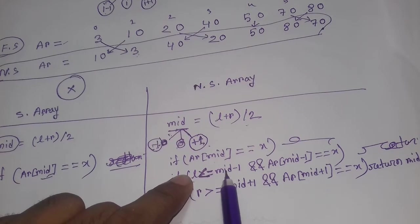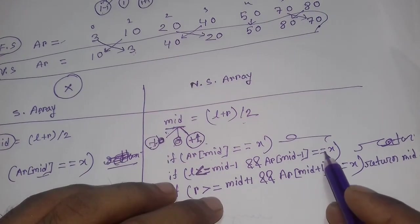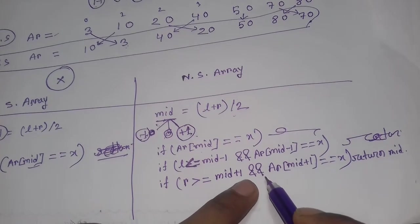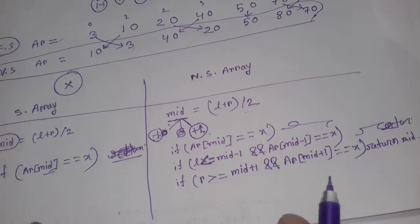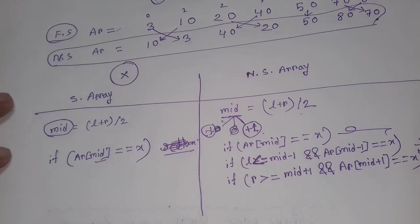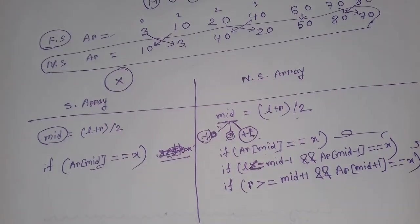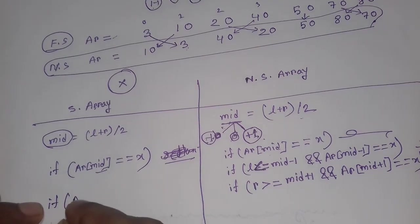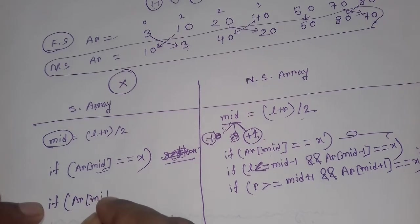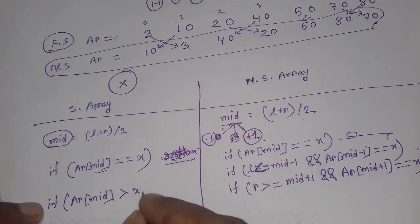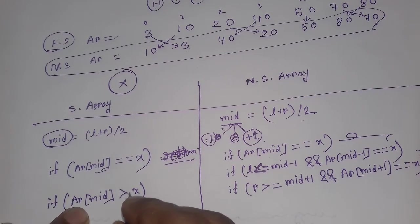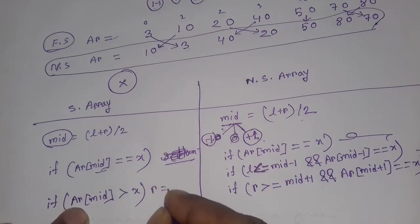We check that mid minus 1 is greater than or equal to L, and that arr[mid - 1] equals x; if so, we return mid minus 1. If the element is not found at mid or its neighbors, and arr[mid] is greater than x, we set r equal to mid minus 2.